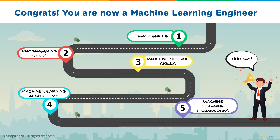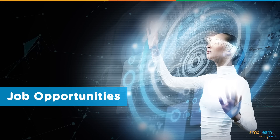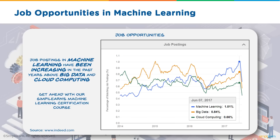And that's it — congratulations, you are now a machine learning engineer! Now let's look at the job opportunities in machine learning. Before 2015, machine learning was much less popular than big data and cloud computing, but all of that suddenly changed. Right now, a machine learning engineer earns around $114,000 per annum, which is a clear indication that organizations are ready to invest heavily in people skilled in the concepts of machine learning.